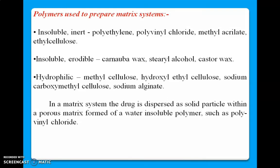This tablet has the ability to retard or slow down drug release. Various polymers can be used to prepare matrix systems: insoluble inert polymers such as polyethylene, polyvinyl chloride, and methyl acrylate; insoluble erodible polymers like carnauba wax, castor wax, and stearic acid; and hydrophilic polymers. The drug is dispersed as solid particles within a porous matrix of water-insoluble polymer such as PVC, through which the drug diffuses. When using insoluble erodible polymers, the polymer erodes from the surface of the dosage form and the entrapped drug is released slowly.